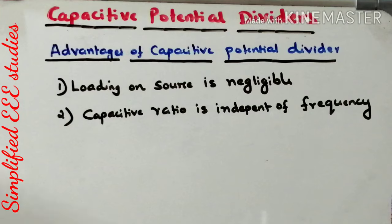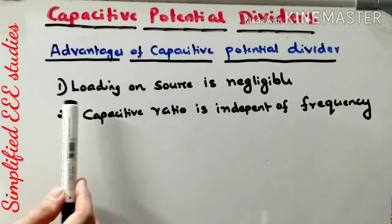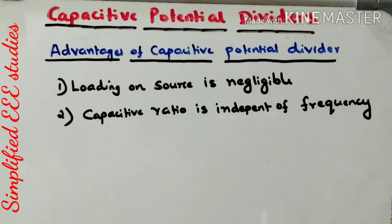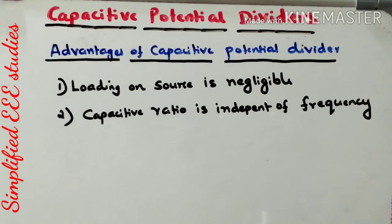Now let me outline some advantages of Capacitive Potential Divider. Number one: loading on the source is negligible — the meter will not consume any power from the source. That is one of the major advantages. Furthermore, the Capacitive Ratio will be totally independent of frequency — it is 100% independent of frequency. While doing the design, the frequency effect will be negligible. That is another advantage of Capacitive Potential Divider.